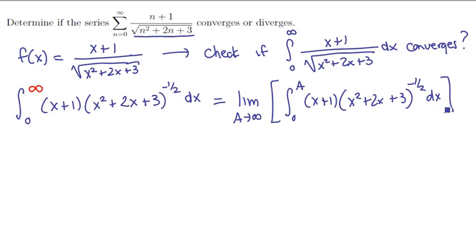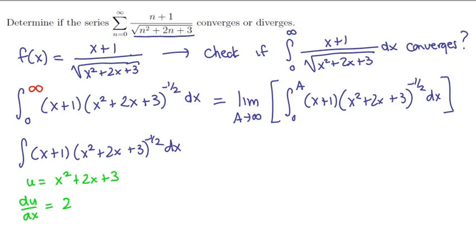Let's focus first on finding an antiderivative. The integral of (x+1)(x² + 2x + 3)^(-1/2) screams for a substitution. Let's let u be the expression inside the bigger set of parentheses. If we differentiate that, we get du/dx = 2x + 2.